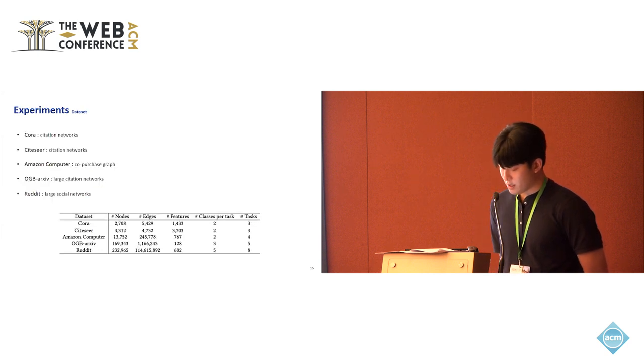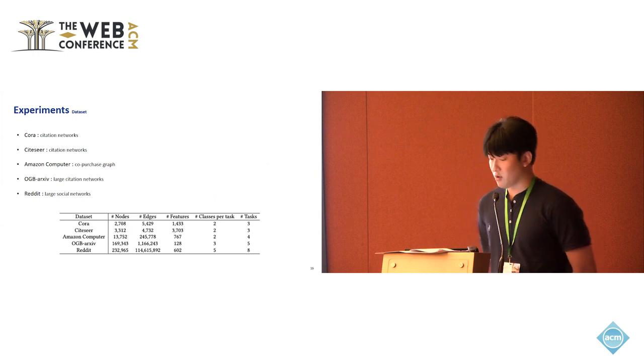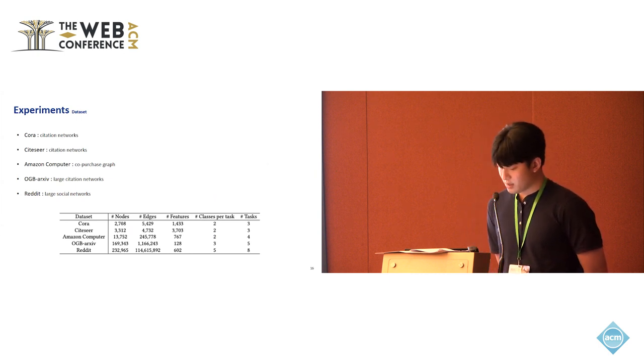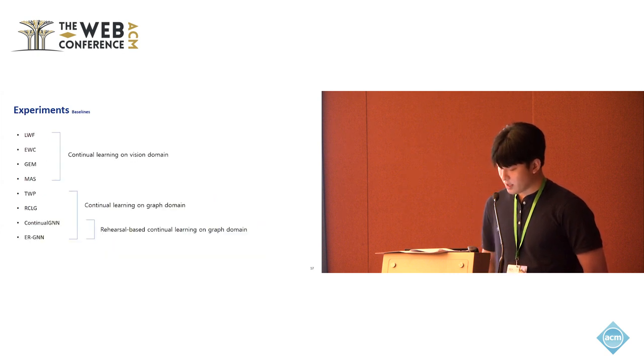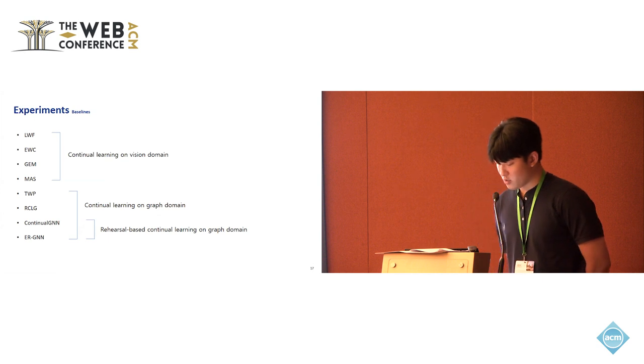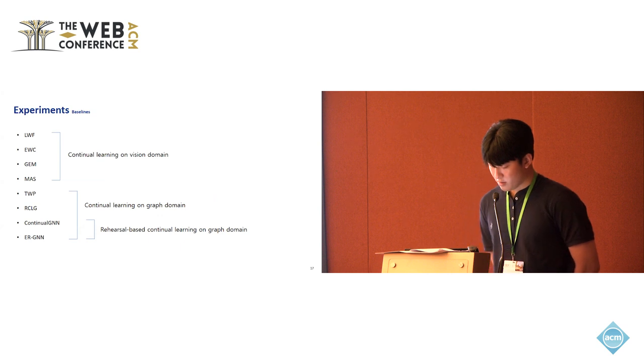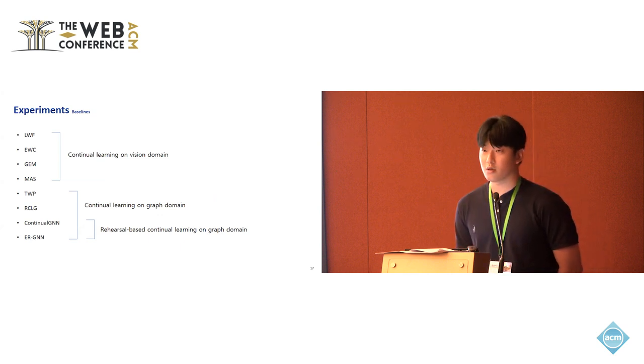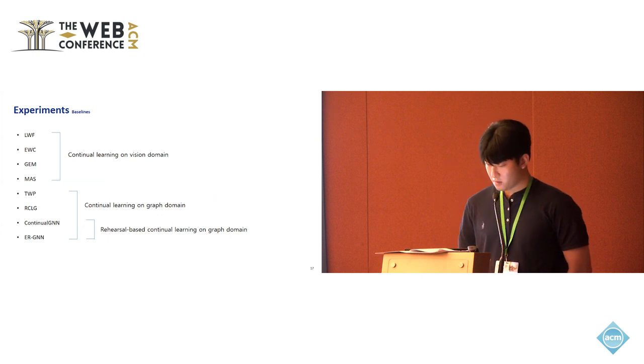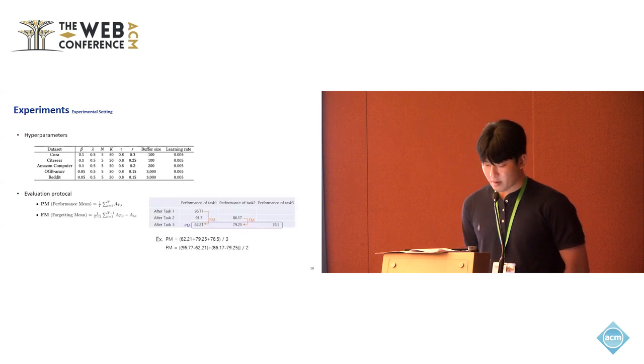We will explain the experimental section from now on. Five datasets were utilized with varying network types and size. The baselines are as follows. They can be divided into models that apply continual learning to the vision and graph domain, with the main baseline being a rehearsal-based approach applied to the graph domain.